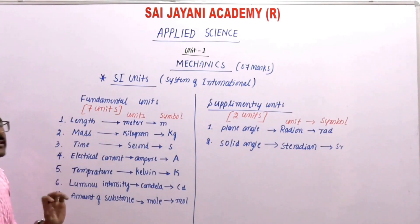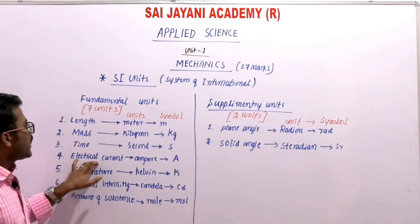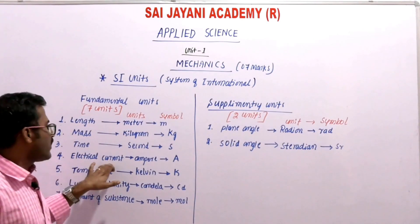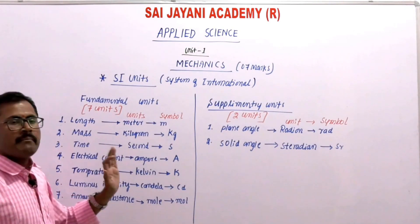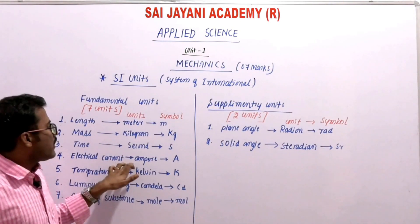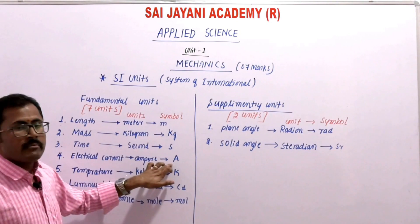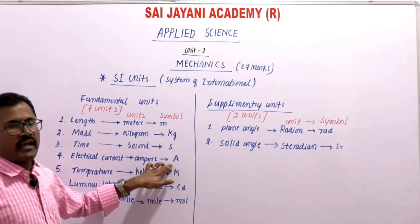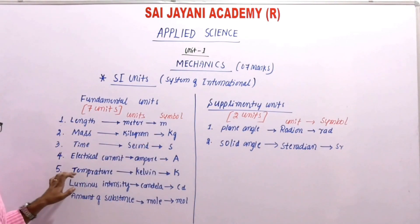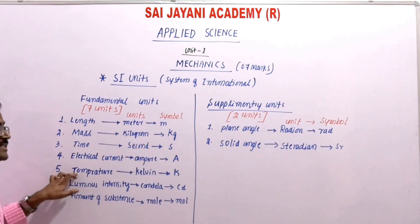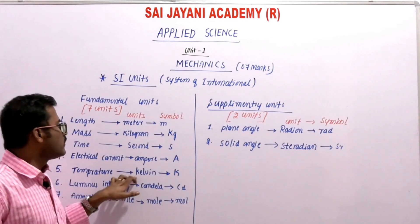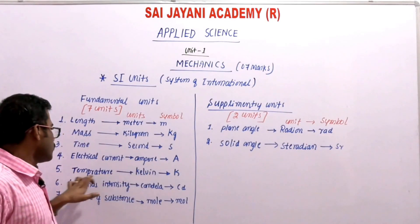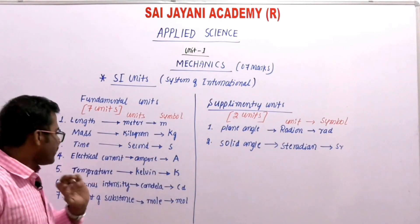The fourth quantity is electrical current. The SI unit of electric current is ampere, represented by capital 'A'. The fifth quantity is temperature. The SI unit of temperature is Kelvin, and the symbol is capital 'K'.